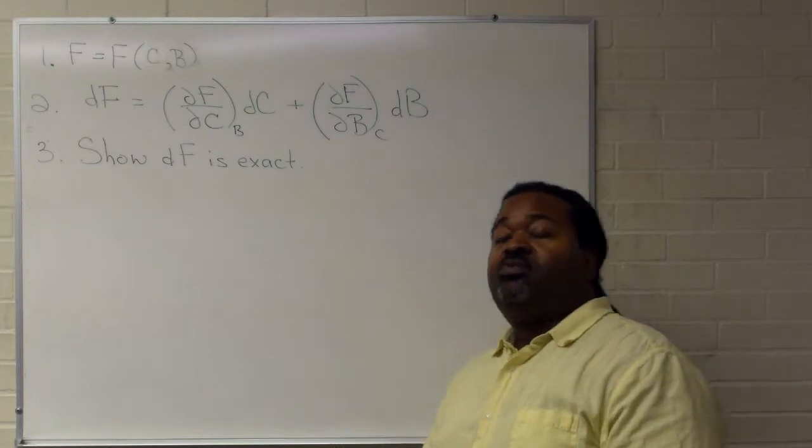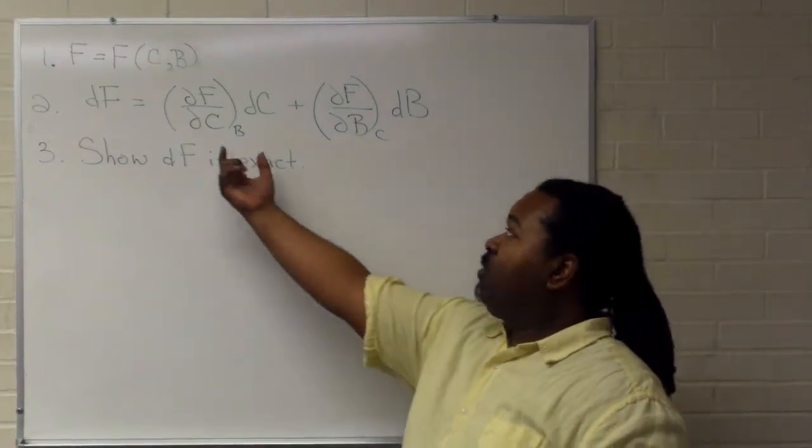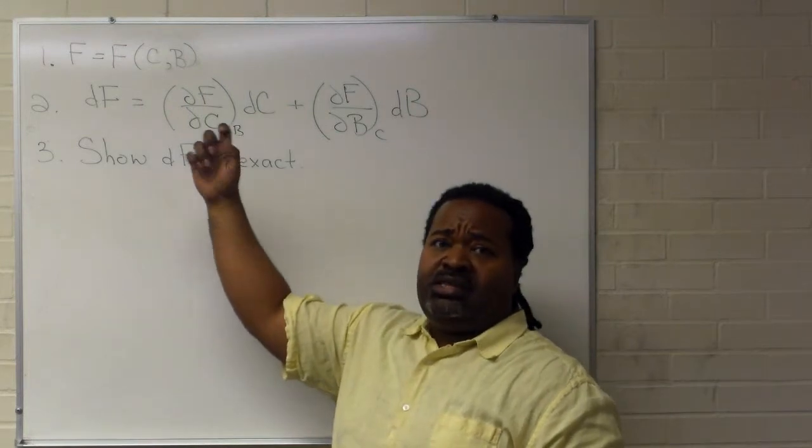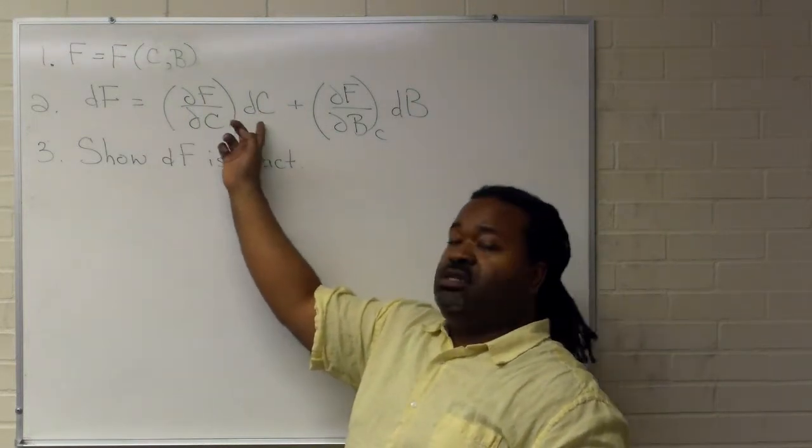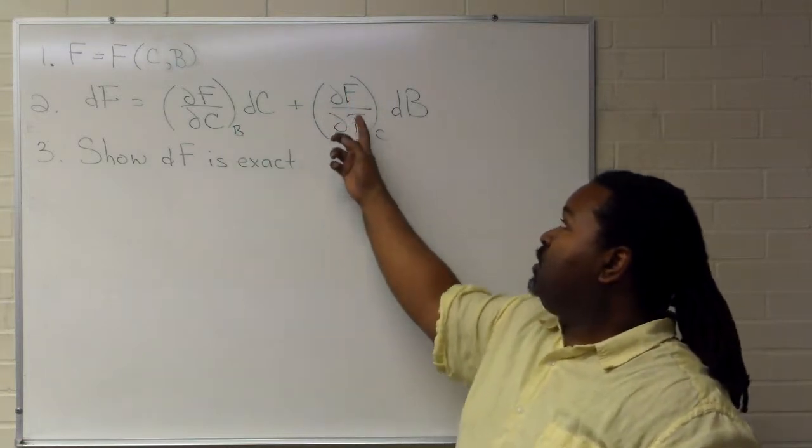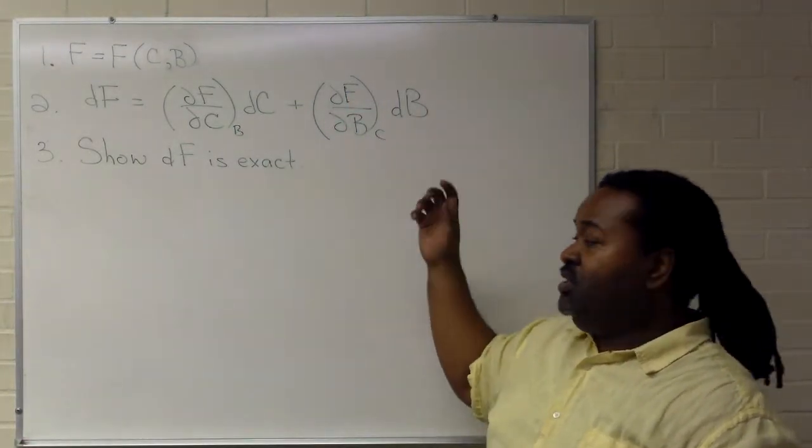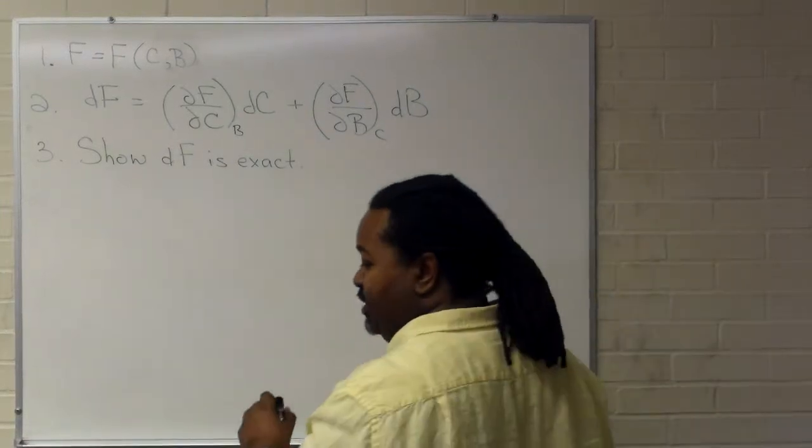What that means on a practical level is that when we write out an expression for partial F, partial C, the only variables we have remaining are in terms of C. And the partial F, partial B, the only thing we have are B's.